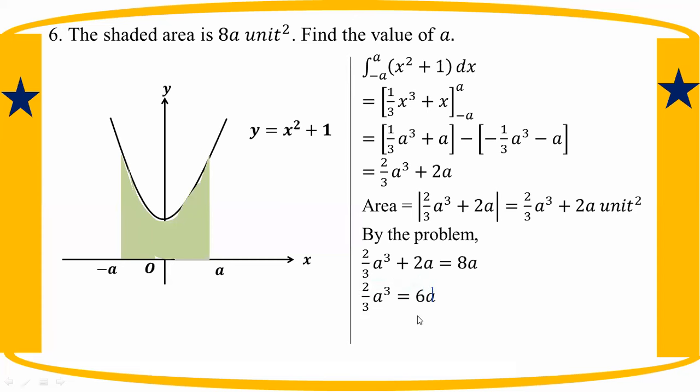So a squared equal to 9. A squared equal to 9, so a equal to plus or minus 3. Plus 3, minus 3.